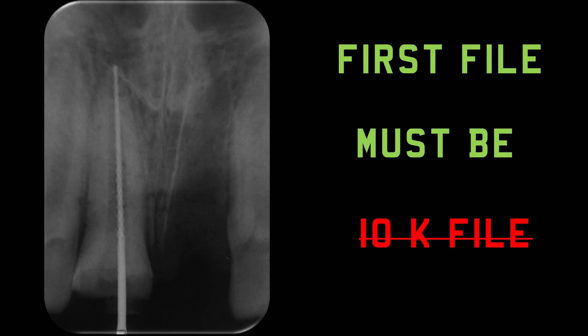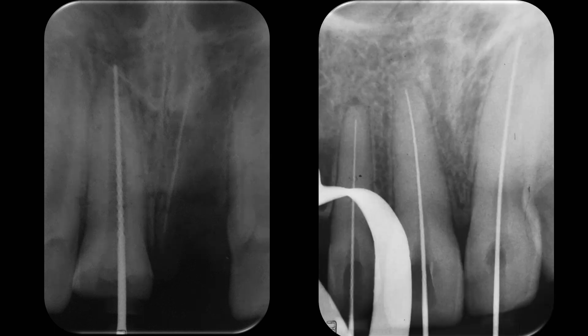There exists a big confusion among dentists about which file should be the first file introduced into the root canal after access cavity preparation. The common misconception is that it should always be a size 10 K file. In most situations, the answer is no. The root canal does not always have a fixed size and shape — sometimes the canals are very wide, sometimes very narrow. How can we use the same file in both situations?